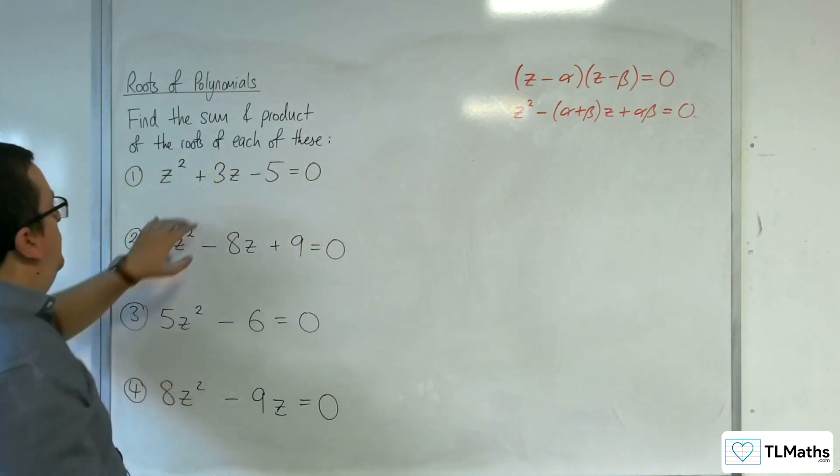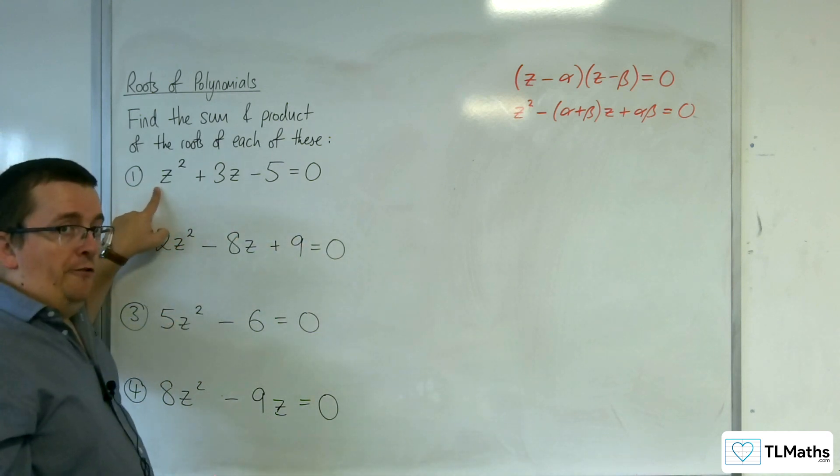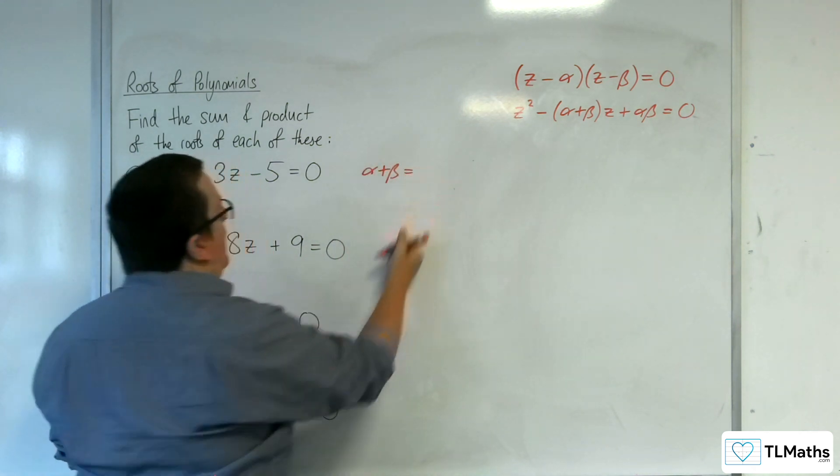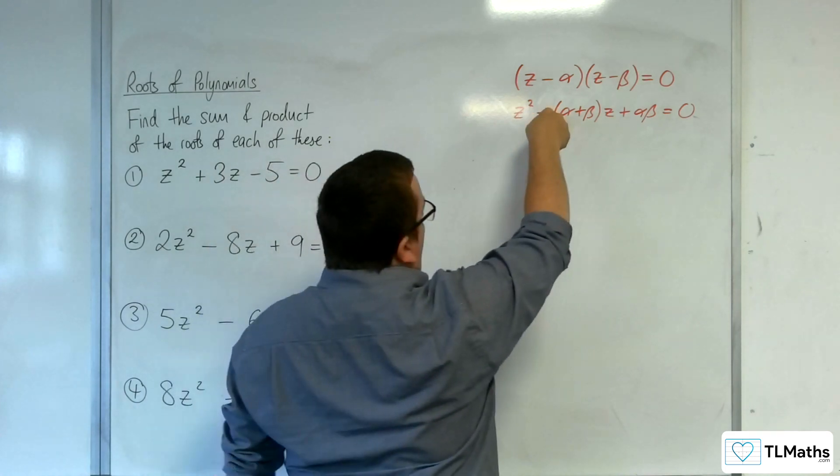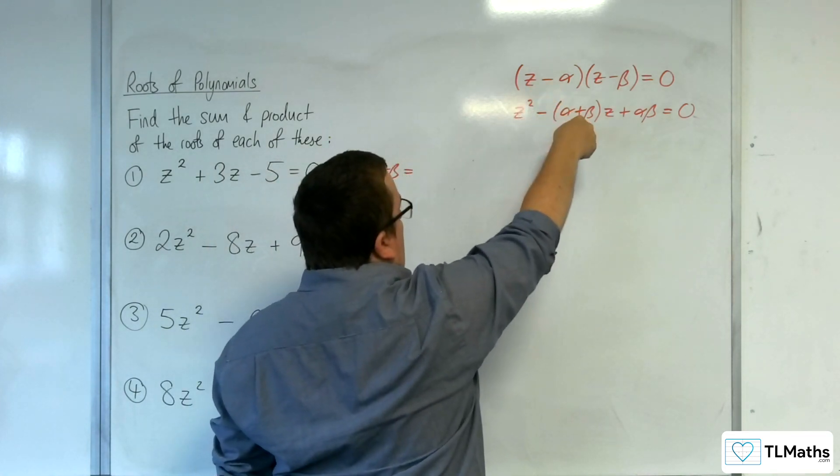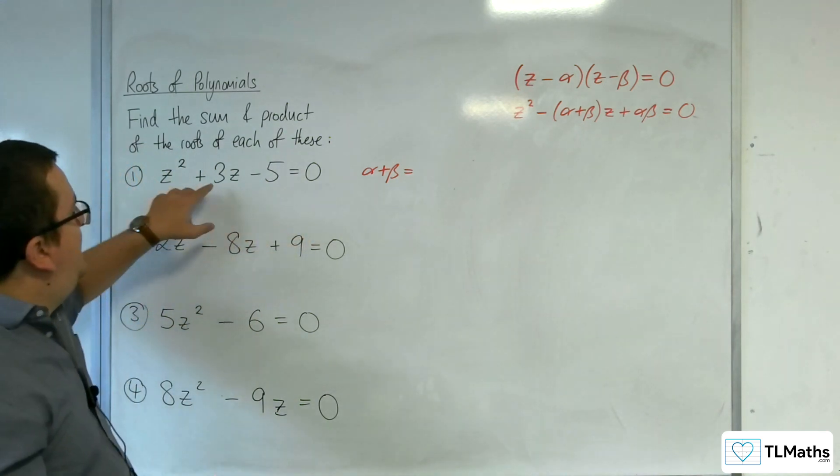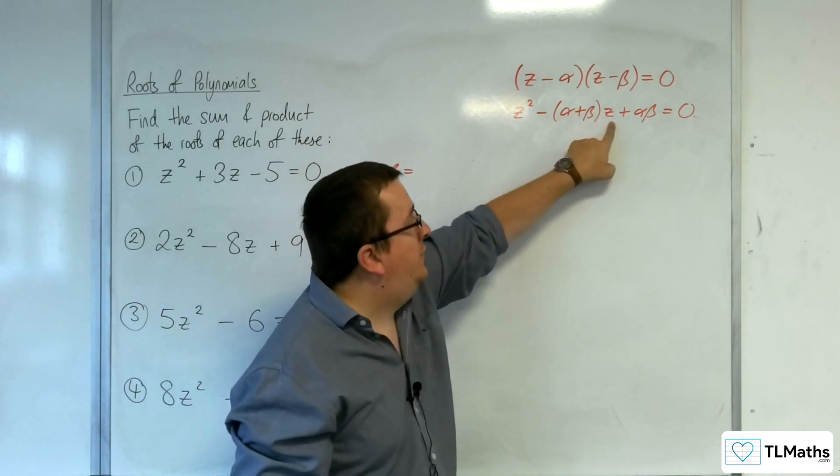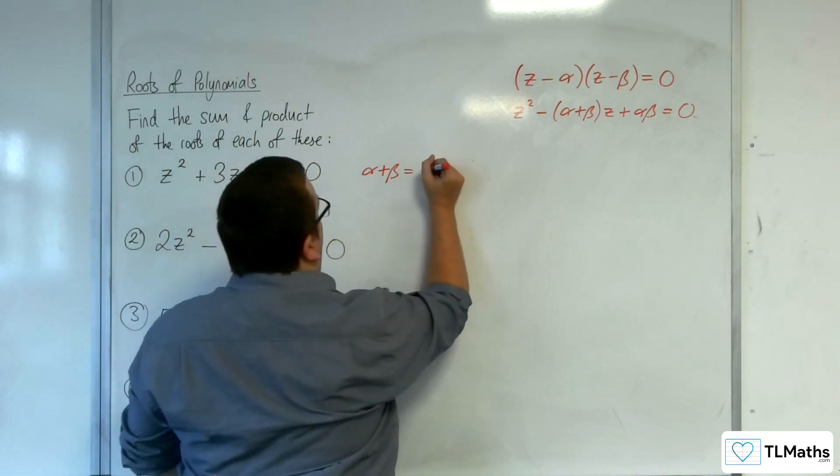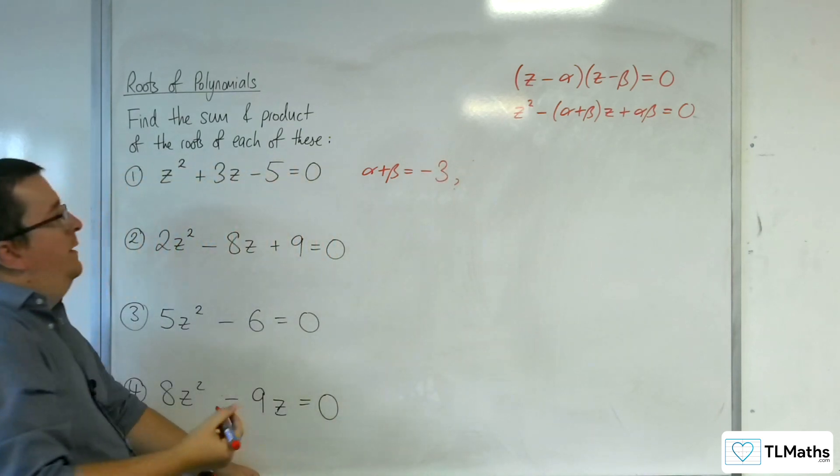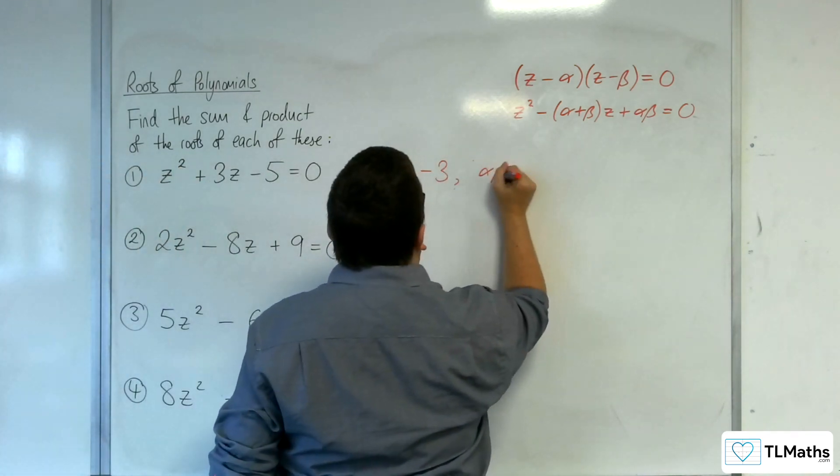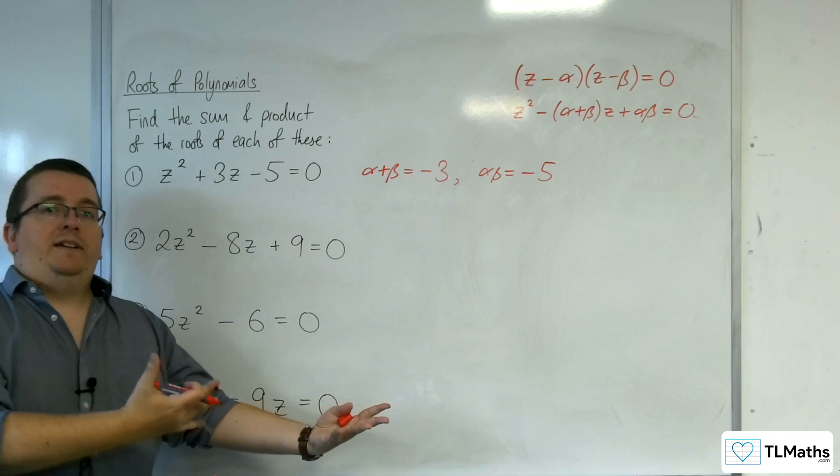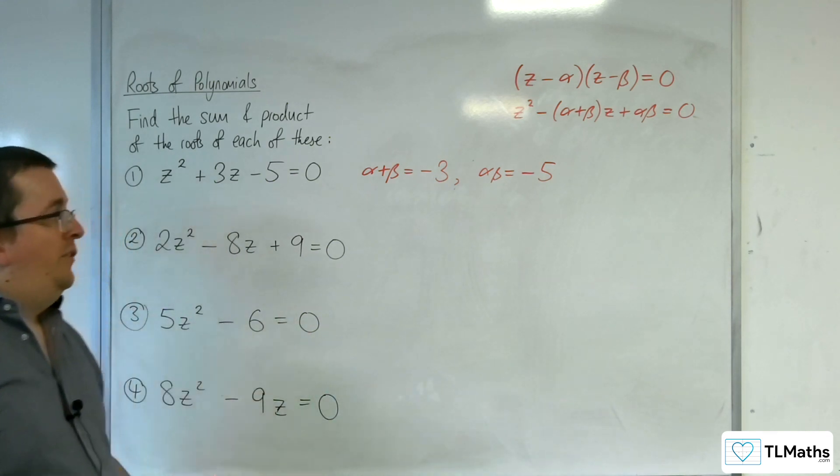So with this first one, we've already got a coefficient of one. So I can read off the sum of the roots straight away. Look at this minus sign. You've got minus alpha plus beta times z. So alpha plus beta needs to be minus 3 in order to have take away minus 3z to get the plus 3. So the alpha plus beta is minus 3. The alpha beta is just the bit at the end, and so that's minus 5, and that's what I needed to find. So it's as easy as that.